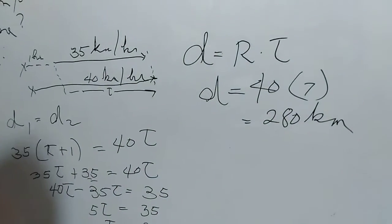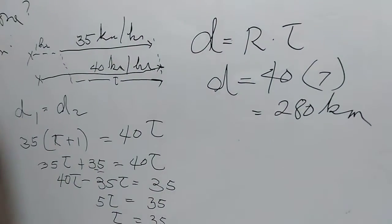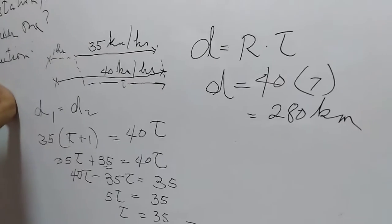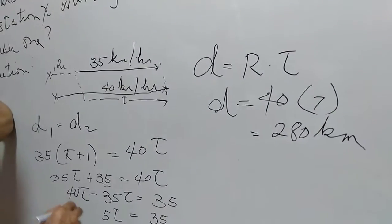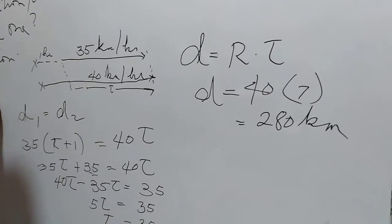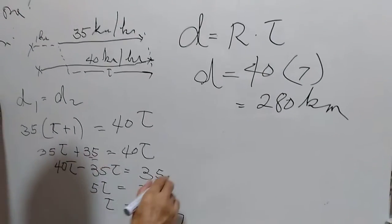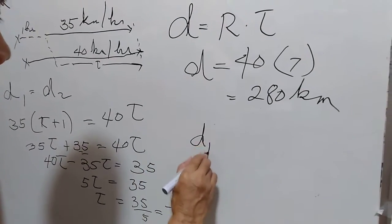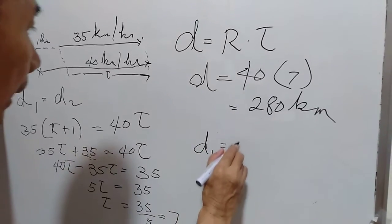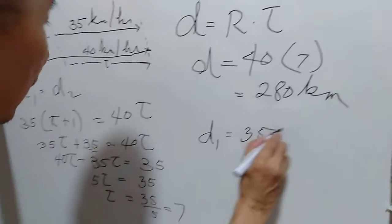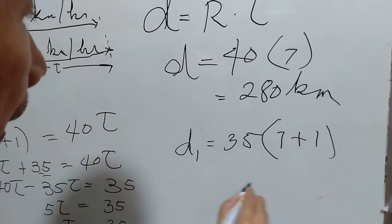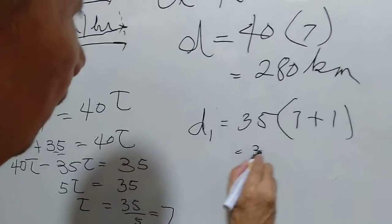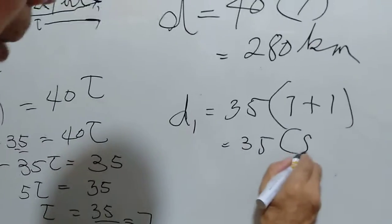So we can check this out here. For train number 1, that is the slower train, train number 1 is 35 times T plus 1, which is 35 times 8.